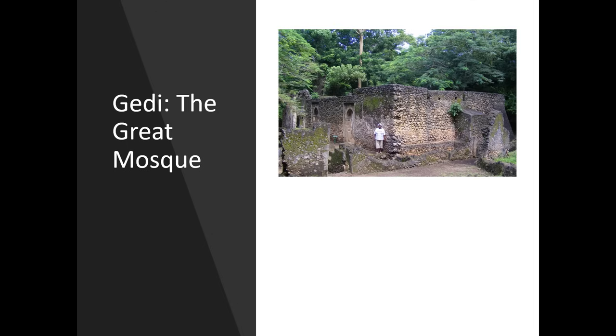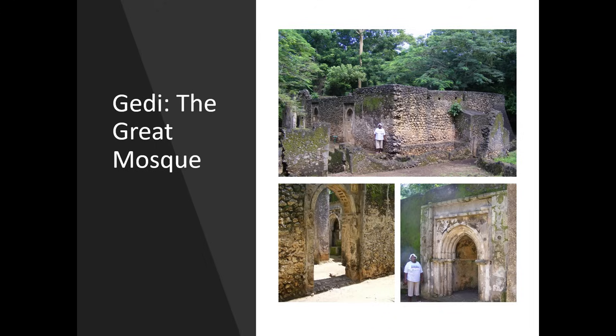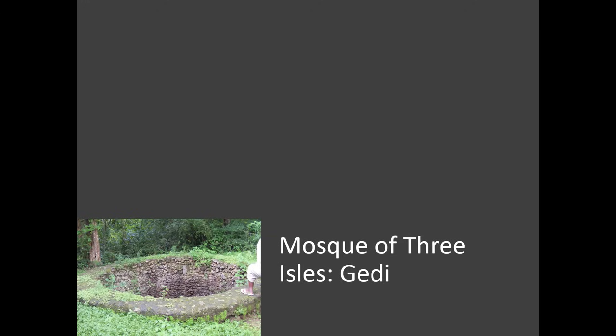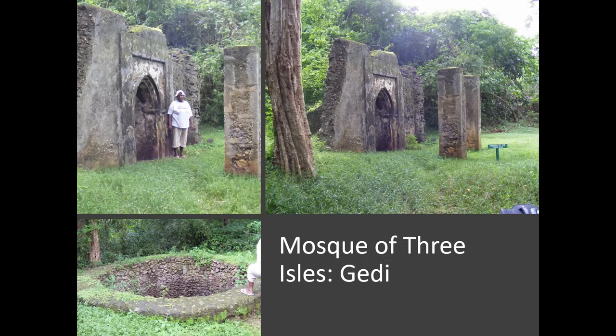Gedi's Great Mosque is a very impressive, very largely intact building. One of the doorways shows the mihrab clearly. The roof is believed to have been wooden, with square columns inside to hold it up. Then there's the Mosque of the Three Aisles — with a water well and mihrab visible. A lot of the building has disappeared, but two remaining columns suggest three aisles on either side, which is presumably how it got its name. The time period we're looking at here is somewhere around the 13th century.